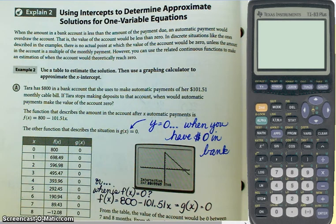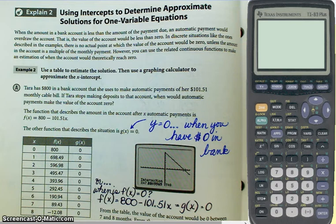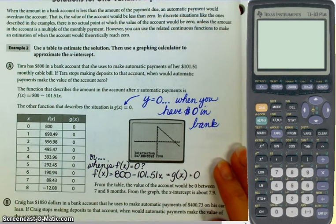Let's walk through these. When the amount in a bank account is less than the amount of the payment due, an automatic payment would overdraw the account. That means basically you're going to bounce a check even though it's an electronic debit or withdrawal. The value of the account would be less than zero if the account is overdrawn. In discrete situations like the ones described, there's no actual point at which the value of the account would be zero because it would be more than zero until you get to the one withdrawal that puts it in the red or makes it overdrawn. You can use related continuous functions, however, to make an estimation of when the account would theoretically reach exactly zero.